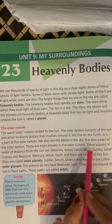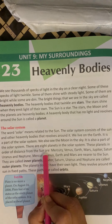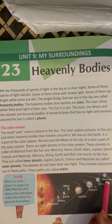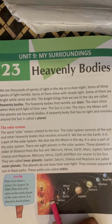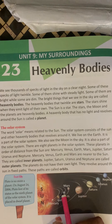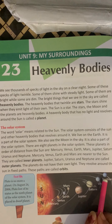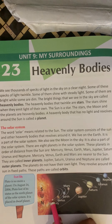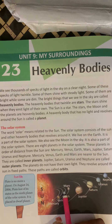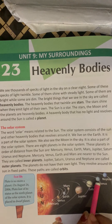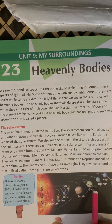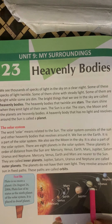These planets, in order of distance from the sun, are: Mercury, Venus, Earth, Mars, Jupiter, Saturn, Uranus and Neptune. Once again: Mercury, Venus, Earth, Mars, Jupiter, Saturn, Uranus and Neptune. These are the names of the planets in the solar system.